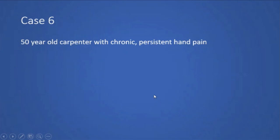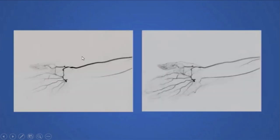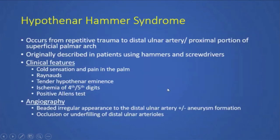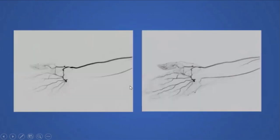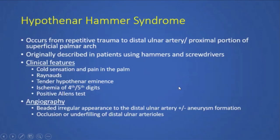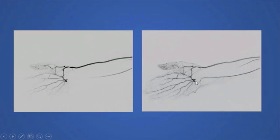The next case is a 50-year-old male carpenter with chronic persistent hand pain. On angiogram, the radial artery fills appropriately, but the ulnar artery shows sluggish flow with an area of non-filling — classic hypothenar hammer syndrome. This occurs from repetitive trauma to the distal ulnar artery and proximal superficial palmar arch. Common features include cold sensation in the palm, Raynaud's, and a tender hypothenar eminence. Angiography shows a beaded, irregular appearance with occlusion or underfilling of the distal ulnar arterioles.